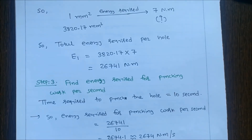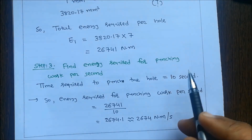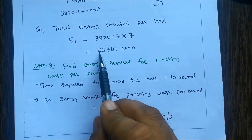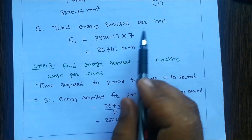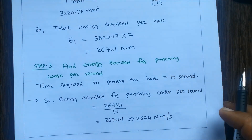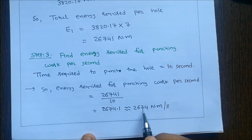Step 3: Find energy required for punching work per second. Time required to punch one hole is 10 seconds, so energy per second = 26741 / 10 = 2674 N·m per second.